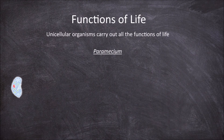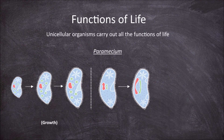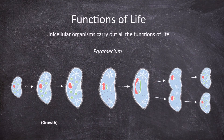Paramecium grow until they reach a size that affects their surface area to volume ratio, where they divide via asexual reproduction into two smaller unicellular paramecium. Two individuals can also fuse before splitting in a form of sexual reproduction.